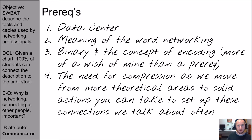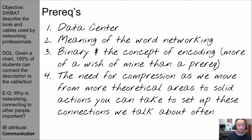Also watch the OSI Oversimplified video. If you made it this far, I imagine you know what binary is and the concept of encoding something — though this one we can get away with you not totally understanding; it's more of a wish than a prereq. The last one you should really know to make this more meaningful is the need for compression, as we move from theoretical areas to solid actions you can take to set up connections in a network.